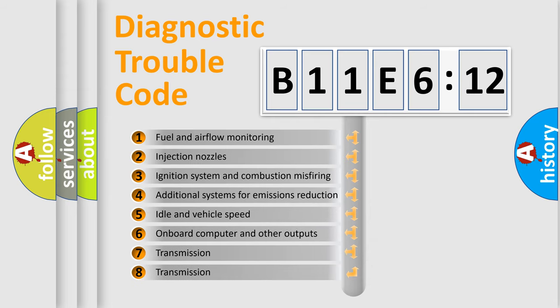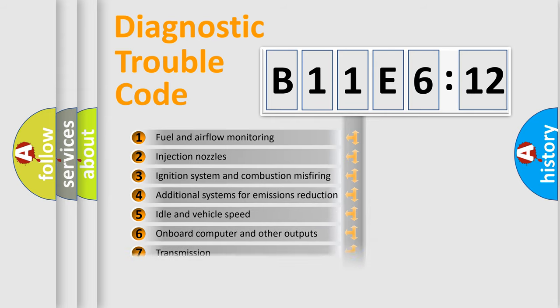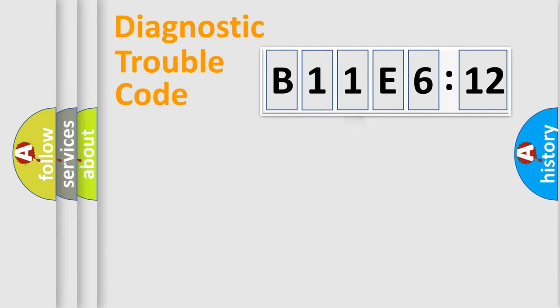The third character specifies a subset of errors. The distribution shown is valid only for the standardized DTC code. Only the last two characters define the specific fault of the group.